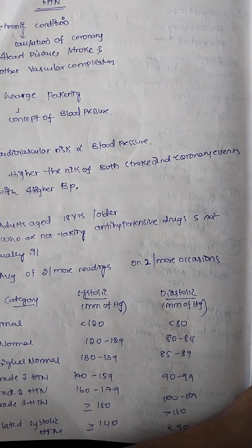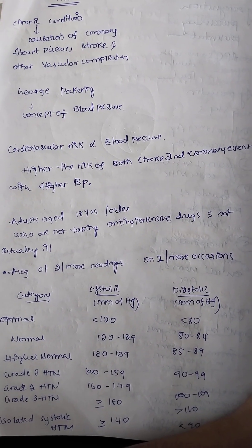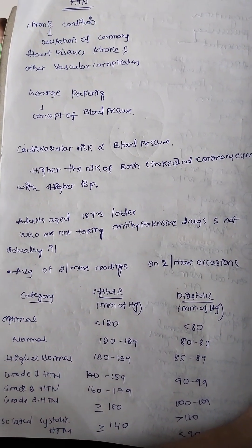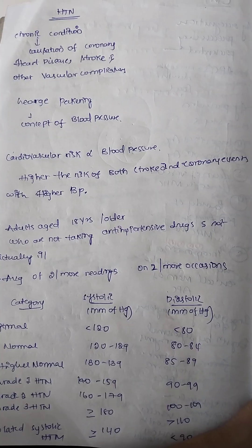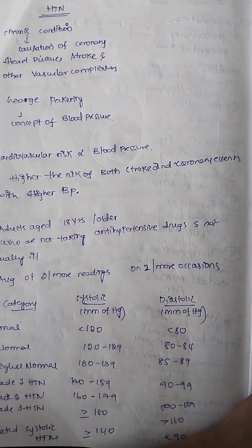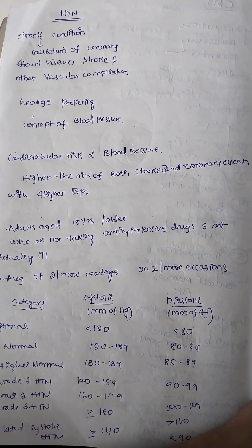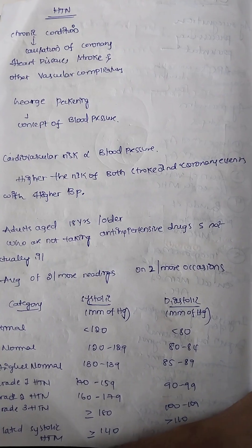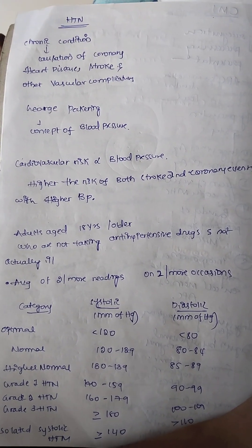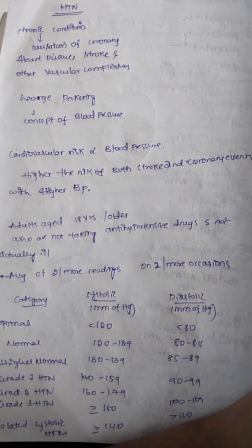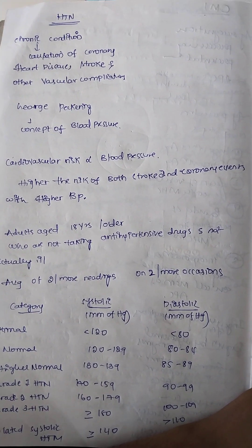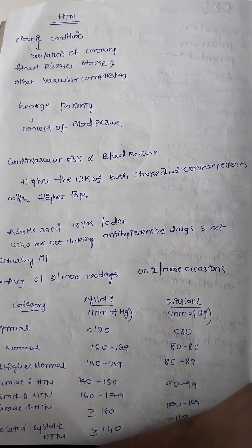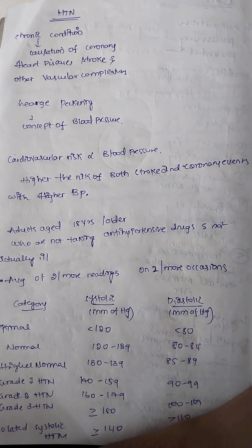Everyone will get confused about what is hypertension and they may say the definition of blood pressure for hypertension. Blood pressure is a measurement used to assess hypertension — we use BP, blood pressure, as a measurement. It is not the definition.